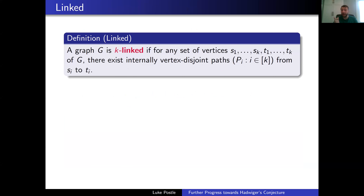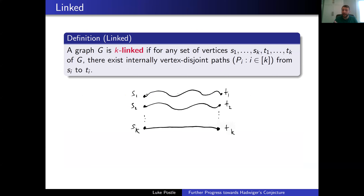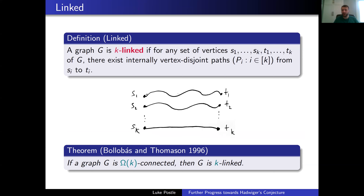The next ingredient is linkedness. We say a graph G is K-linked if for any set of vertices S1,...,Sk and T1,...,Tk, there exist internally vertex-disjoint paths Pi from Si to Ti. So not just connected like Menger's, but S1 gets to T1, S2 gets to T2, and so on, for any such set. Bollobás and Thomason in 1996 showed that linear connectivity suffices — something like 22k-connected implies k-linked. That's a constant factor, and we'll need this and a generalization of it.